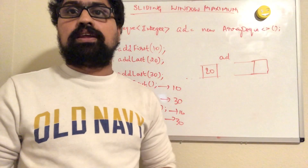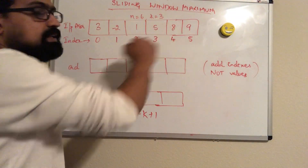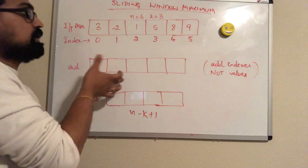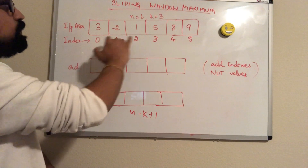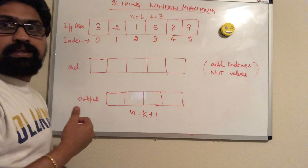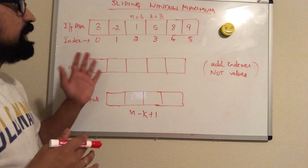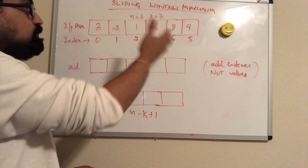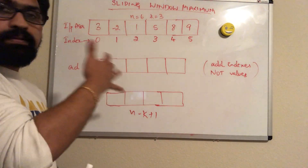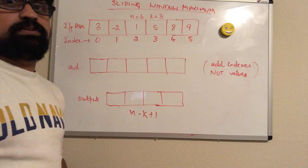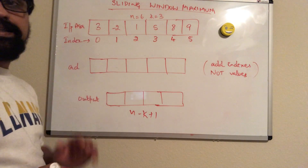Now let's see how we can use this to solve the sliding window maximum problem. I have taken an input array with marked indexes. The ArrayDeque will store the indexes and not the values. The reason is whenever we move from one window to the next, it's easier to discard the previous window using indexes. The output has n minus k plus 1 elements. The idea is: we iterate through the array from left to right, and whenever we find an element greater than the previous elements, we discard all those previous elements. Whenever we move to a new window, we discard the previous window.